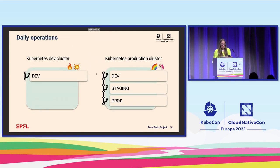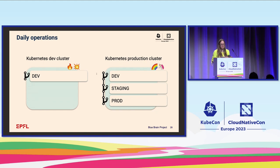For daily operations, from a user point of view: we have two different Kubernetes clusters in the organization — the dev cluster and the production cluster. In the dev cluster we have a replica of our dev environment where we can destroy it completely, delete backups, and see what happens — or test new features and Kubernetes upgrades to understand how they affect us. The Kubernetes production cluster has a dev, staging, and production environment: it's meant for software developers to test new features in dev, for external users to test in staging, and production is for production.